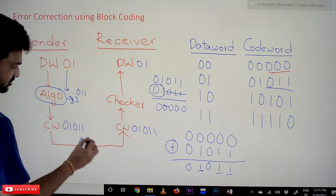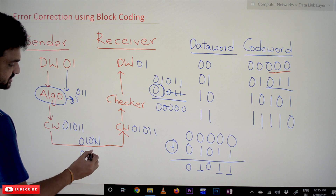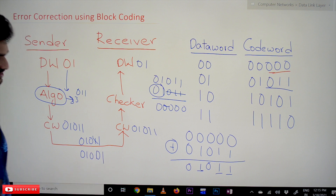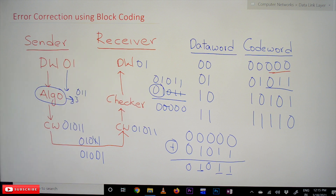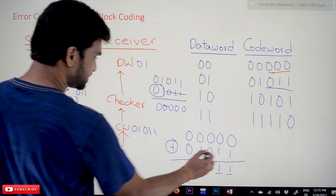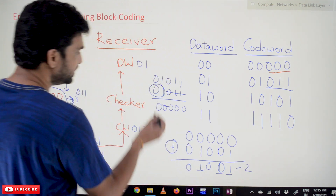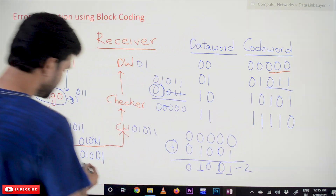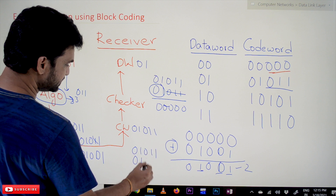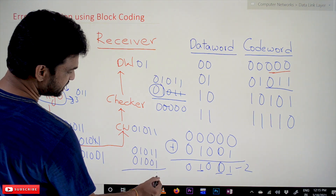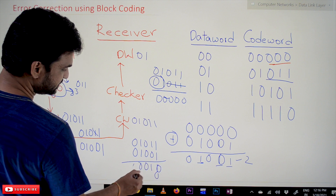Now consider the case where an error has occurred. The transmitted code word '01011' has one bit changed — it becomes '01001'. Now how do we detect and correct the error? We again do the comparison. '01011' is compared with '01001' using XOR, and the output shows that one bit has been changed.